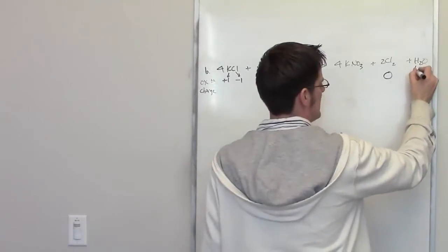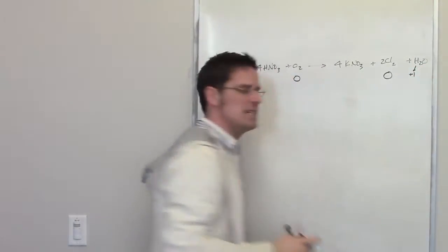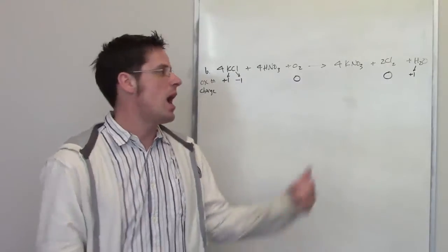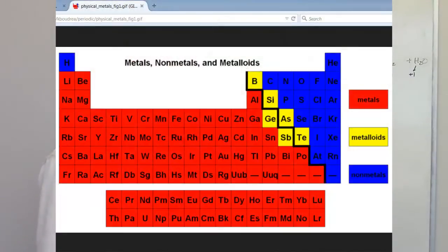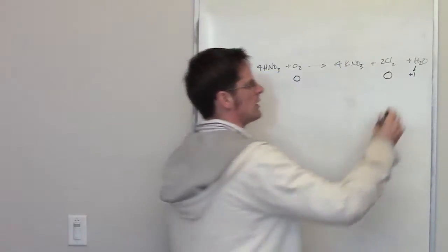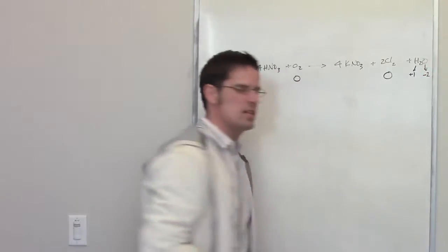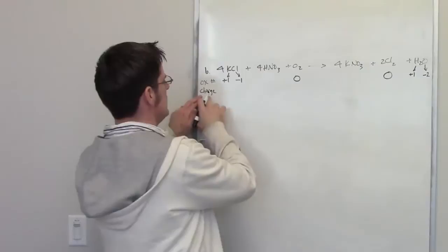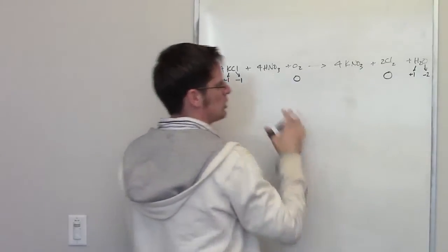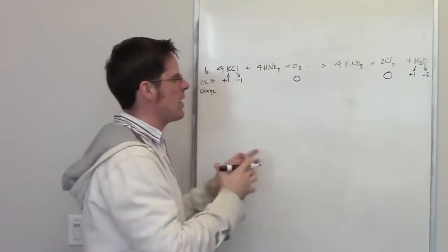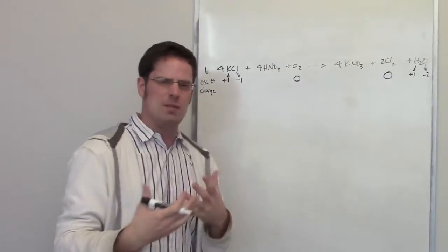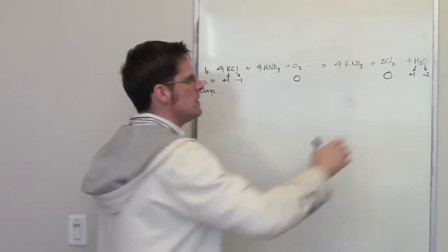Hydrogen must have an oxidation number of plus one, and that's indeed the case whenever you have hydrogen bonded to another non-metal, at least almost always. Oxygen, by similar rule I've outlined elsewhere, has an oxidation number of negative two. Now, the reason I've got this line here that says overall charge is because sometimes it helps me figure out elements that are in between or confusing. You'll note, for example,